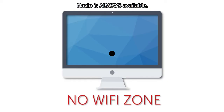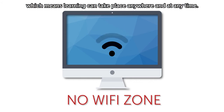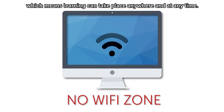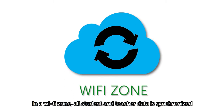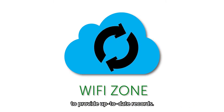Navio is always available. It works offline, so you don't always need to be connected, which means learning can take place anywhere and at any time. In a Wi-Fi zone, all student and teacher data is synchronised to provide up-to-date records.